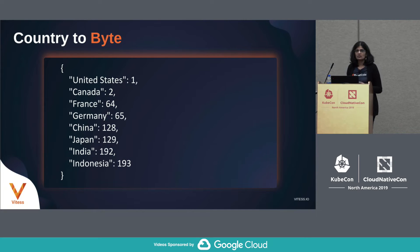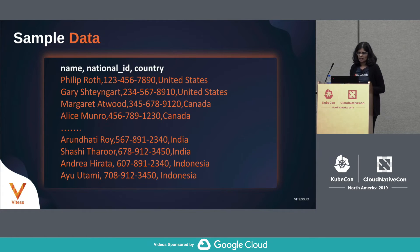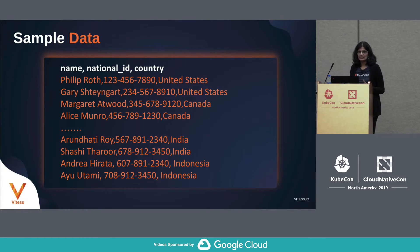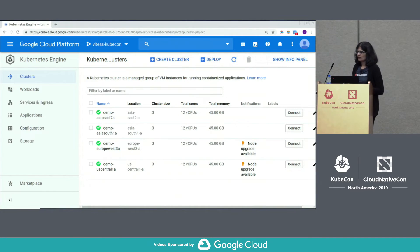The data specification is a simple JSON map that maps country name to its code or byte value. We have sample data including personally identifying information — name and national ID — which are typically subject to data residency laws, plus the column that tells us where the entity should live. Here's a quick look at the four clusters we've created in four different Google Cloud regions — you can see from the GKE console that each is in a different region: Asia, Europe, and US.